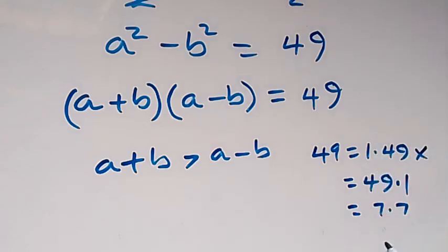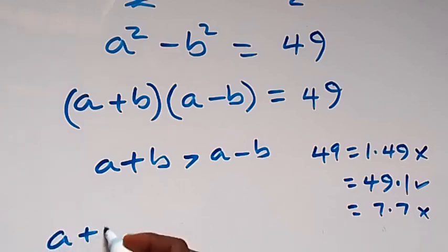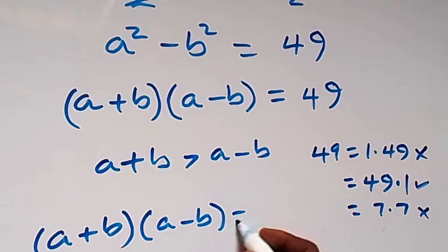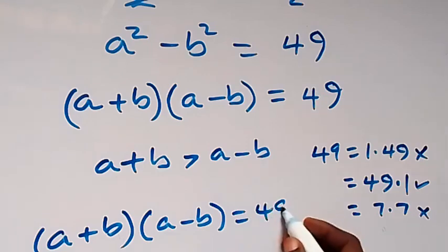So here this is not satisfying this and here this satisfies. Also this one will not satisfy. Then we can write this as a plus b times a minus b will then be equals to 49 times 1.